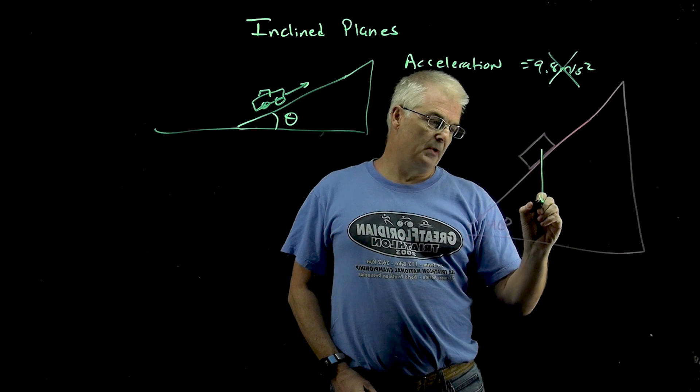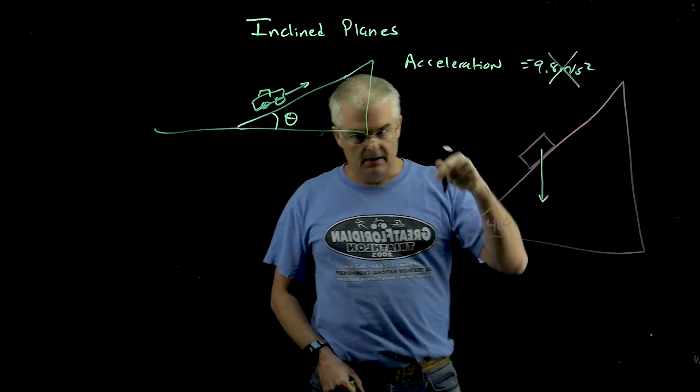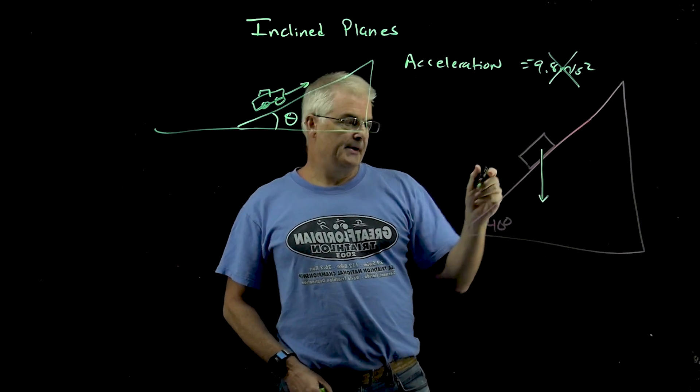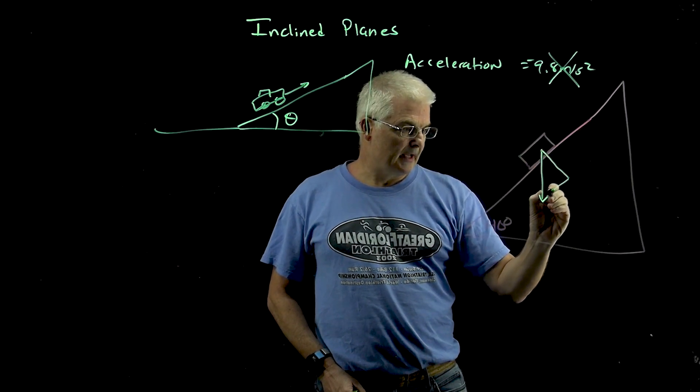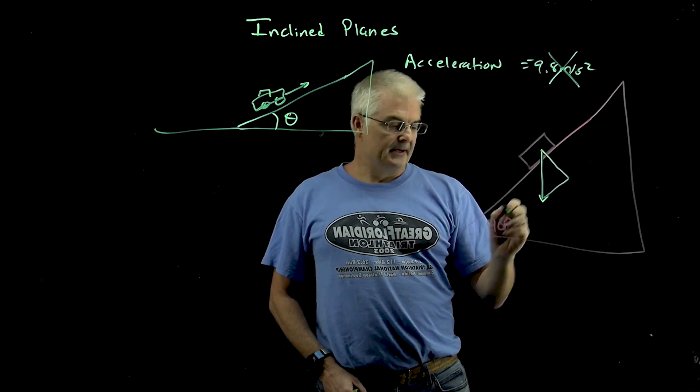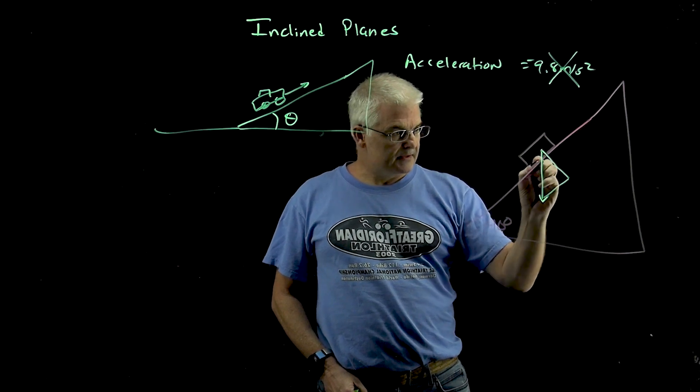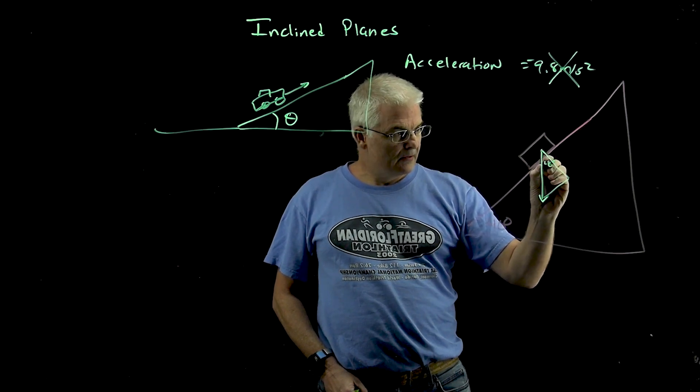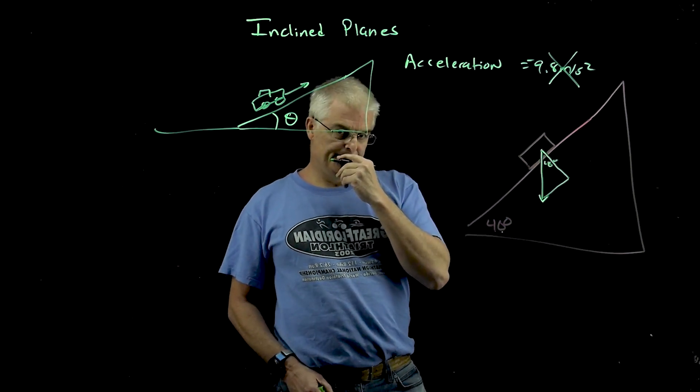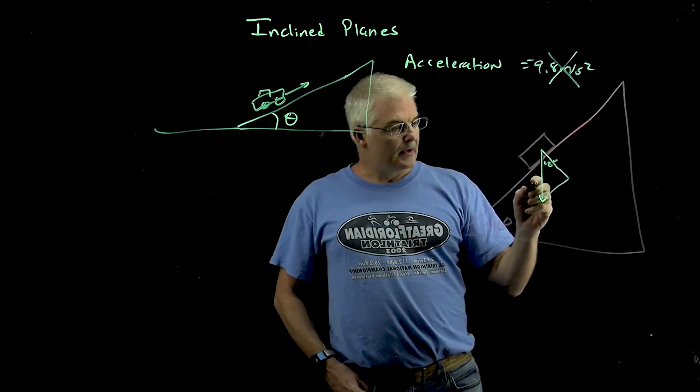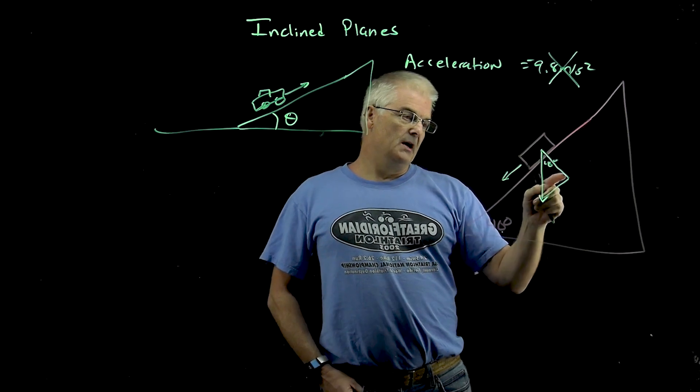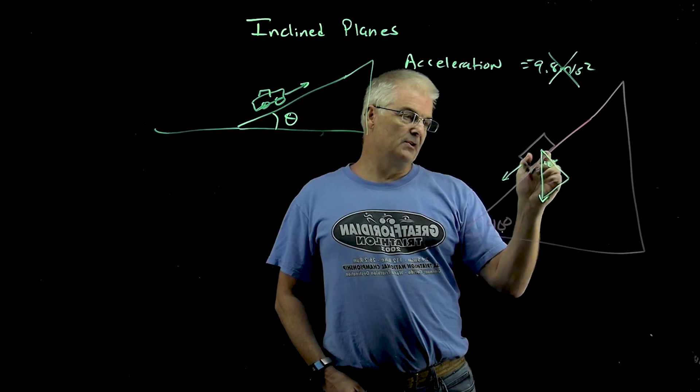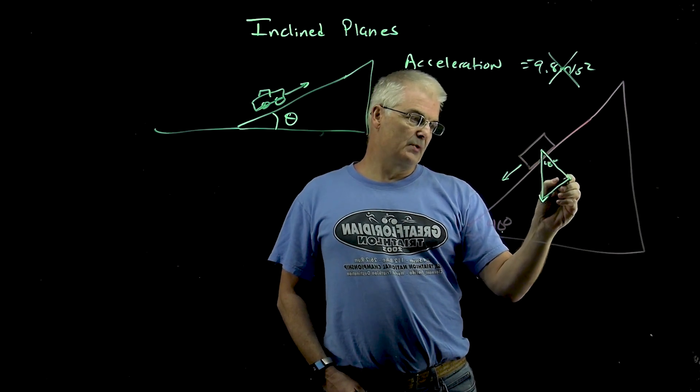gravity always points down. Directly down. And what we can do is we can draw another triangle that's going to look like this. And it turns out this 40 degrees is also equal to this 40 degrees. Okay? And so the acceleration is only this component, if you will, of this triangle. You've also got the component that's directed downward.